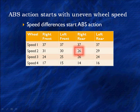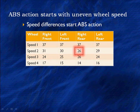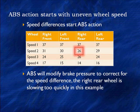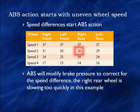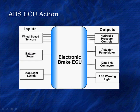Let's look at this in a little more detail of why we need to control pressure. We got here because we had a speed difference. This ABS will modify brake pressure to correct for a speed difference. In this particular example, the right rear wheel is too slow — it's slowing too quickly and it's not in sync with the other wheels. This was enough to give us the onset of ABS.